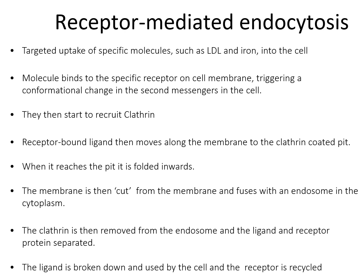Receptor-mediated endocytosis involves the targeted uptake of specific molecules such as low-density lipoprotein and iron into the cell. The molecule binds to a specific receptor on the cell membrane, triggering a conformational change and recruiting clathrin. The receptor-bound ligand moves along the membrane through the clathrin-coated pit, where it is folded inwards and the membrane is cut off, fusing with the endosome in the cytoplasm. Clathrin is then removed from the endosome, the ligand and receptor proteins are separated, the ligand is broken down and used by the cell, and the receptor is recycled.